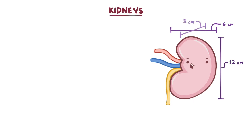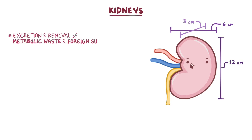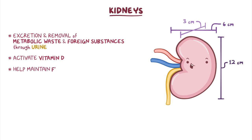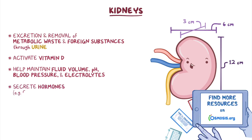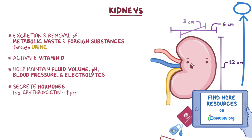The kidneys perform a lot of different functions, such as the excretion and removal of metabolic waste and foreign substances through urine. The kidneys also activate vitamin D when needed, and help maintain the balance of fluid volume, pH, blood pressure, and electrolytes in the body. The kidneys also secrete important hormones, such as erythropoietin, which increases the production of red blood cells.